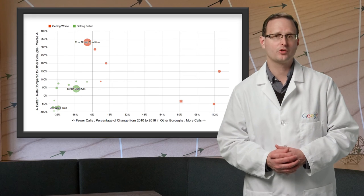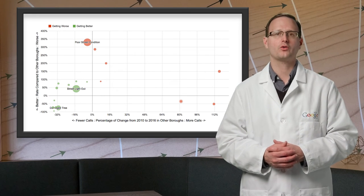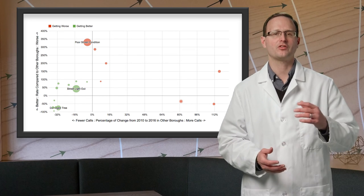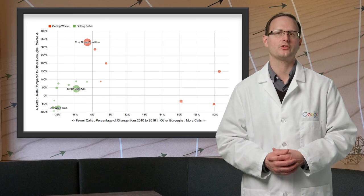Meanwhile, in Queens, complaints about poor street conditions, including potholes and cracked roads, are up 10% against a 5% downward trend everywhere else.